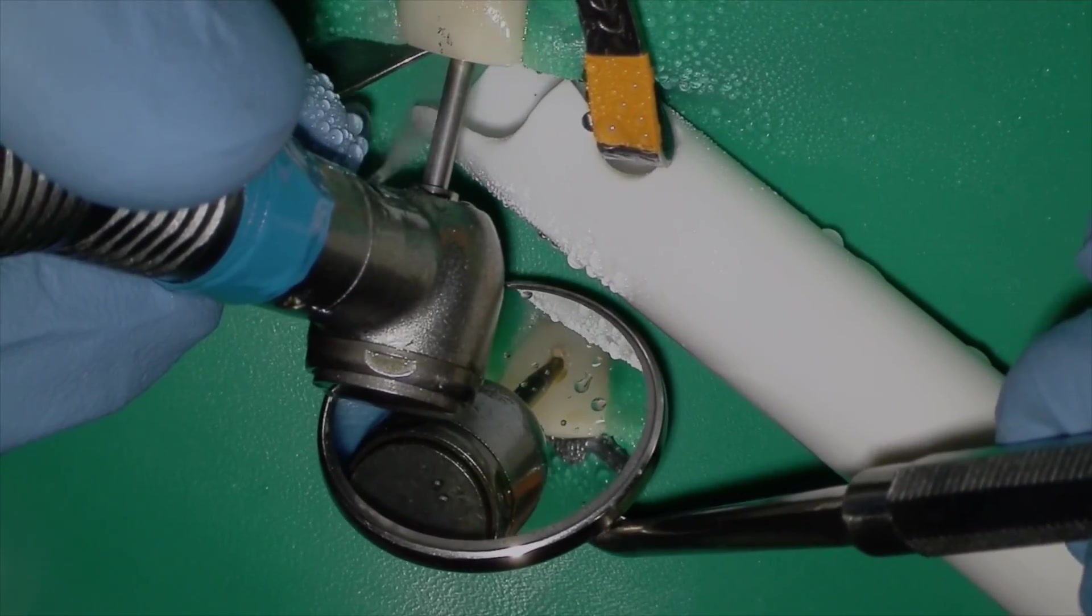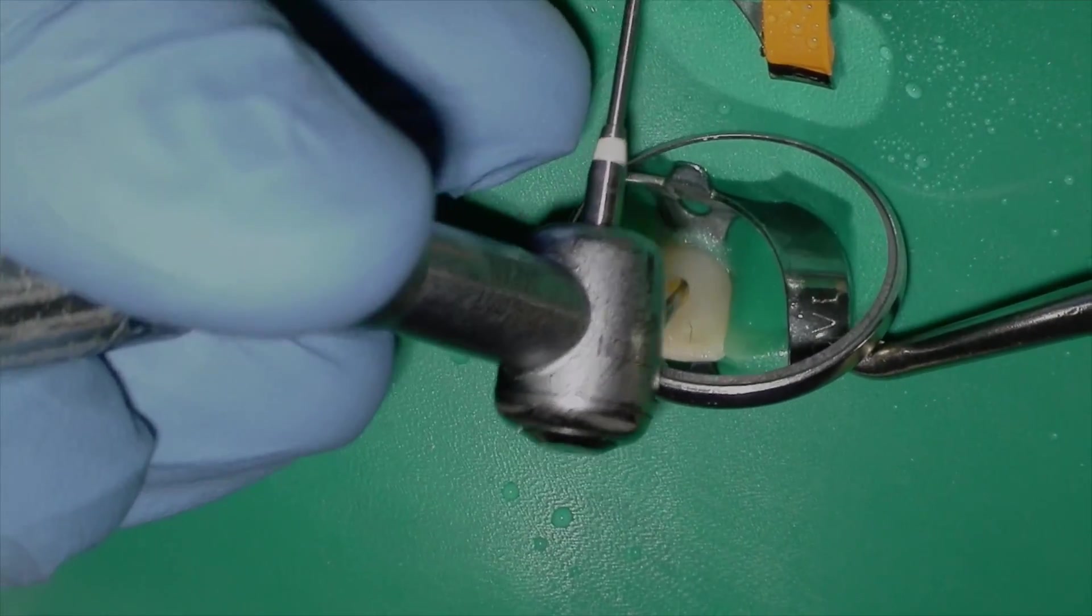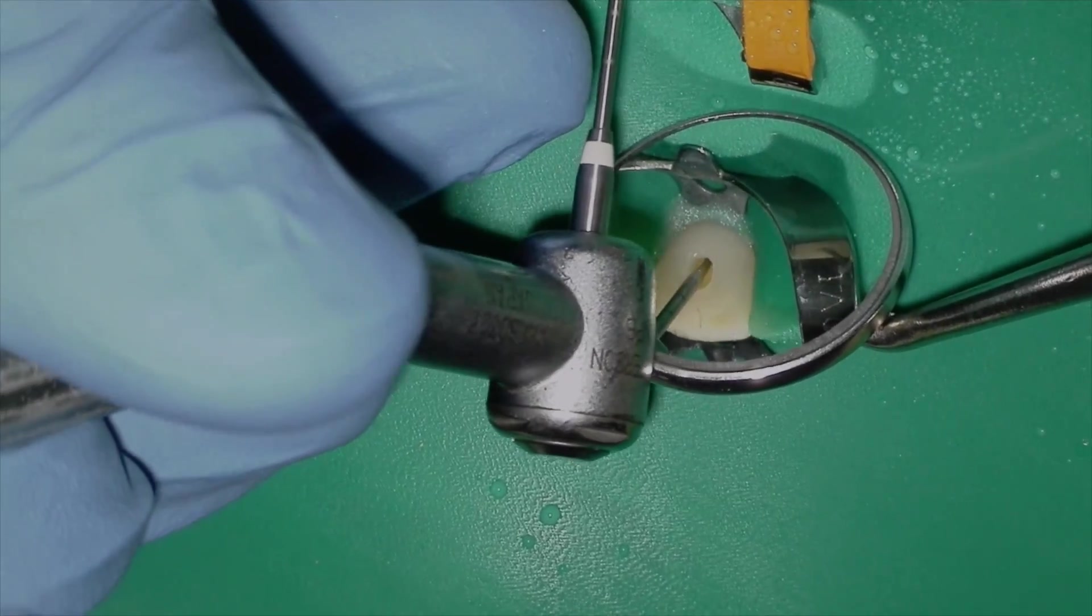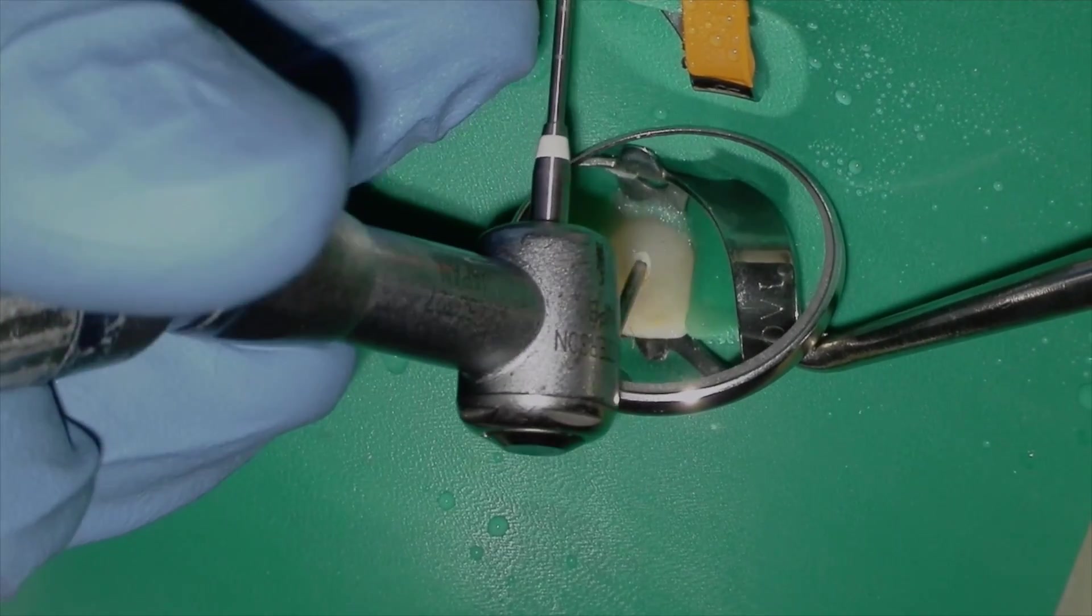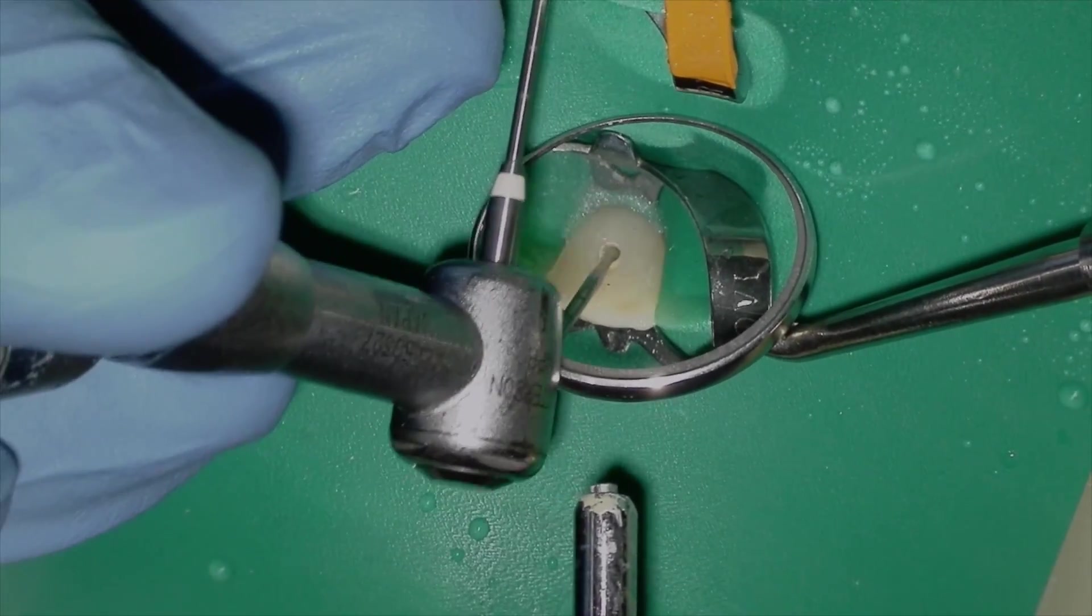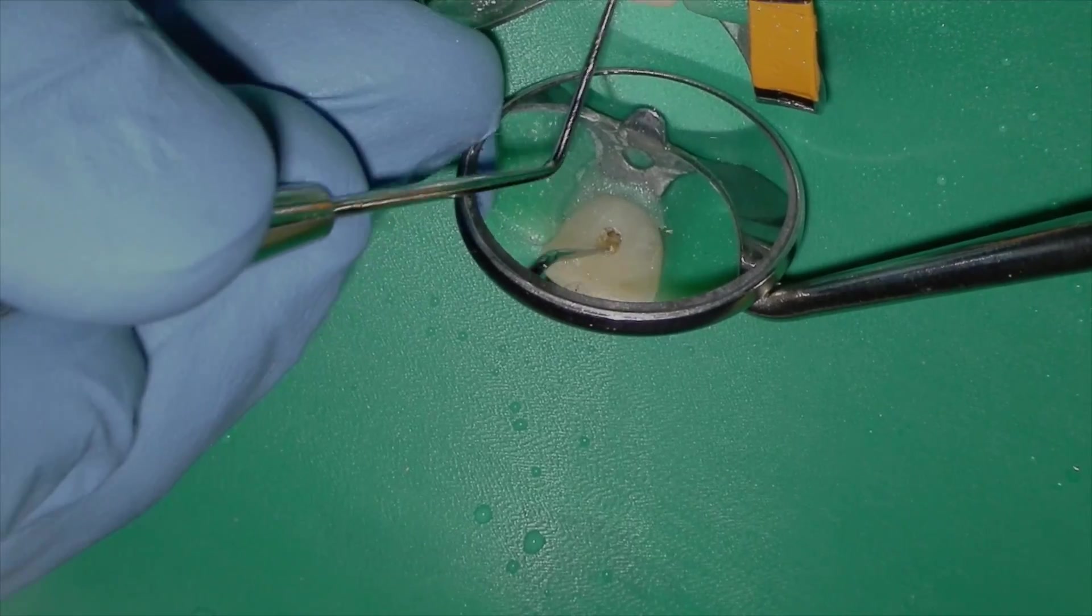But honestly, it felt like I was going a little too deep, a little too fast. So I decided to switch out to a Munce burr, slow speed round burr with a long shank so you can see what's going on at the tip of the burr. And then finally, bam, we're into the pulp chamber.